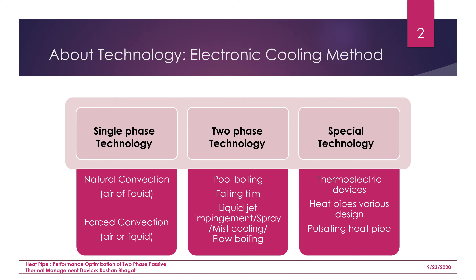With the latest advancement, special technologies like thermoelectric devices, heat pipes of various designs — conventional heat pipes and pulsating heat pipes — are used for cooling electronic equipment within short distances or where space is quite compact. Thermoelectric devices have a heated end and a cooled end; when heat is applied at one end, heat transfer takes place at the other end.